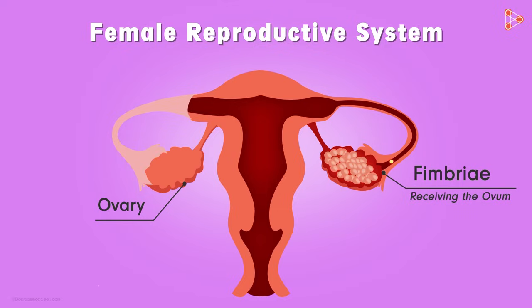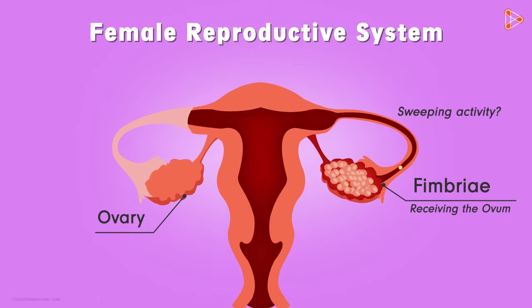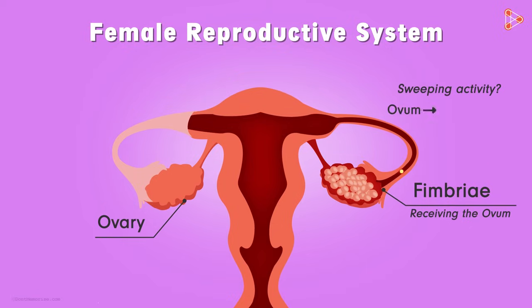But why does the ovum require the sweeping activity? Can't it travel on its own? No, it can't. Unlike the motile sperm, the ovum is non-motile. It cannot move until it is pushed or swept by some other cells.